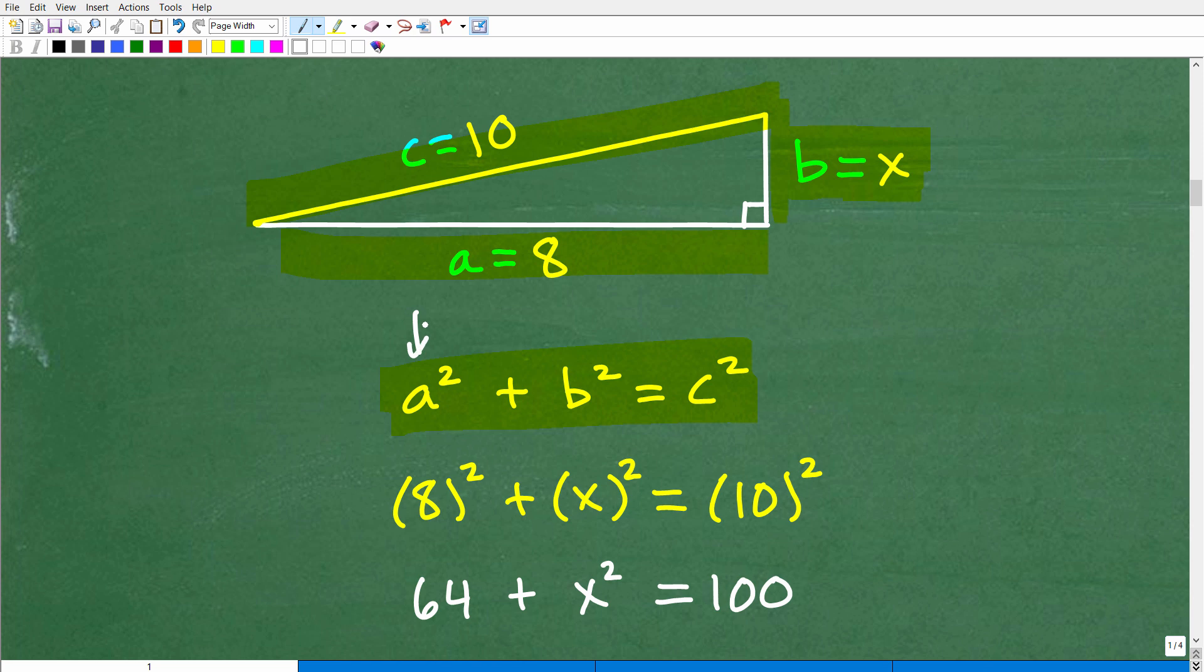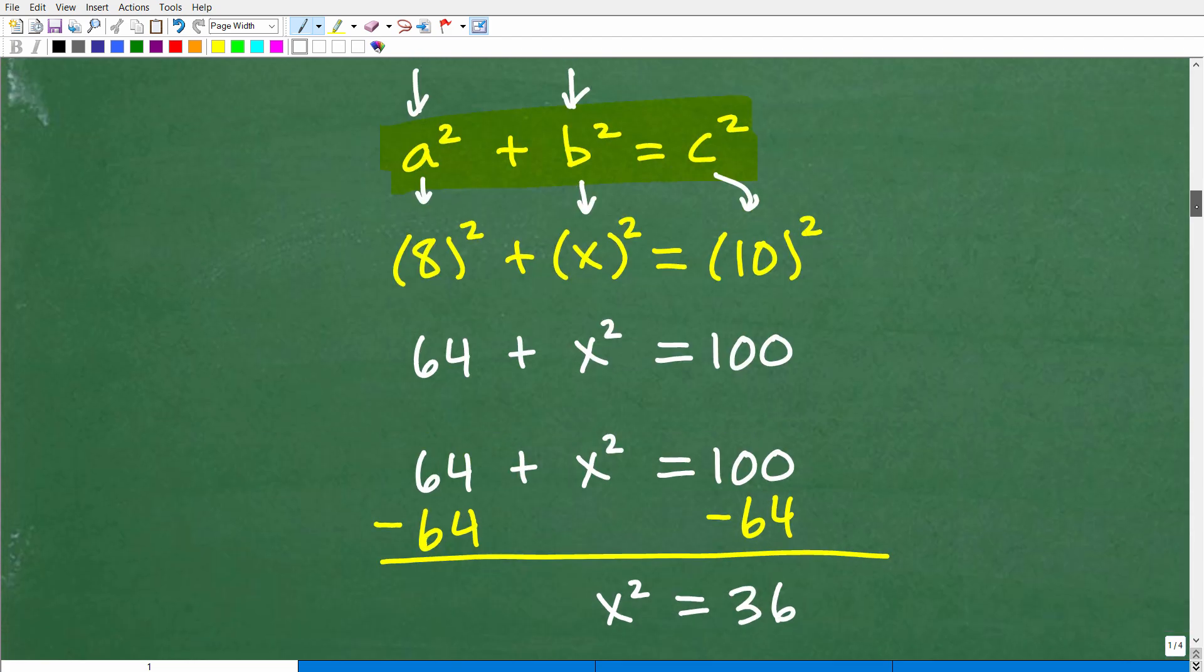All right, so what's A squared? Well it's going to be 8 squared. So we're going to start plugging in these values for this formula. So 8 squared, and then we're going to add that to B squared. So what's B? Well B is equal to X. So that's going to be X squared. And that's going to be equal to C squared, which of course is 10 squared. So now we just go ahead and do some nice basic algebra. Nothing too difficult. So 8 squared is what? 64. 8 times 8 is 64.